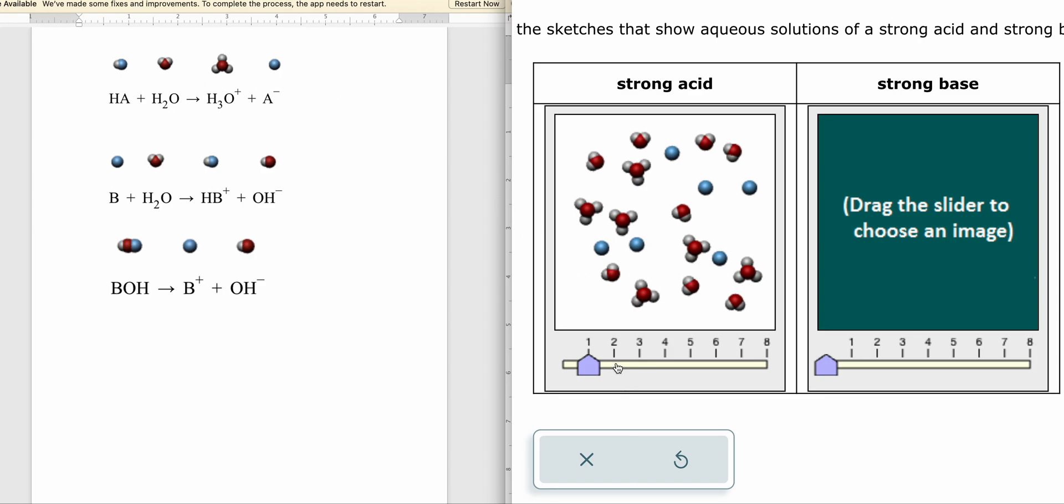Now let's say we wanted to check and see whether some of the other ones could possibly be a strong acid. We'd be looking for just having H3O pluses and A minuses and some water molecules. Here we have a whole bunch of HA's, that means that they didn't dissociate very much, so it can't be a strong acid. Here we have HA's again, as soon as you see those, it can't be a strong acid.